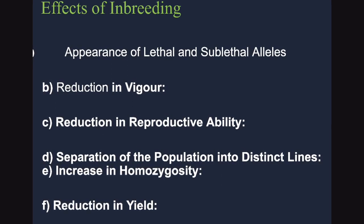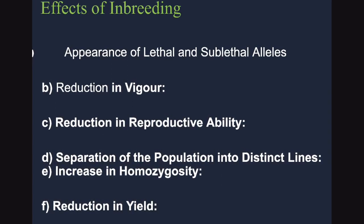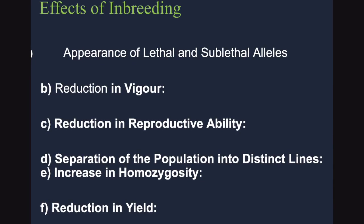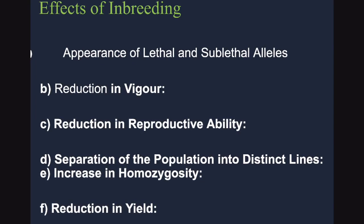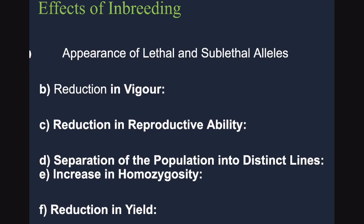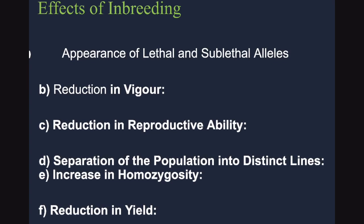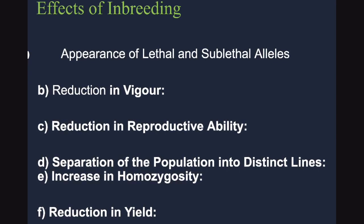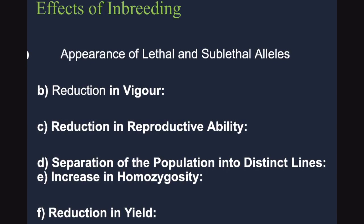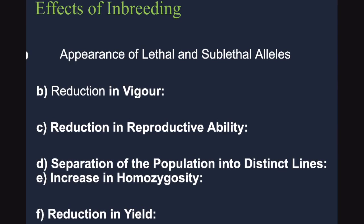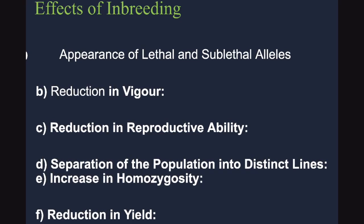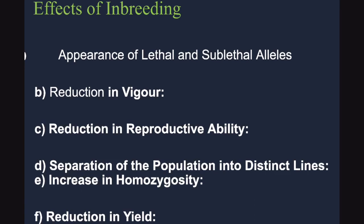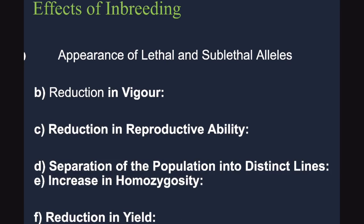The effects of inbreeding include reduced vigor, reduced reproductive ability or reduced fertility, reduction in yield, and sometimes formation of lethal or sublethal alleles. There is also separation of the population into distinct lines and an increase in homozygosity. Homozygosity is sometimes a double-edged sword — it can be advantageous as well.